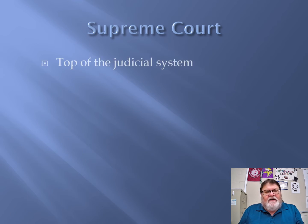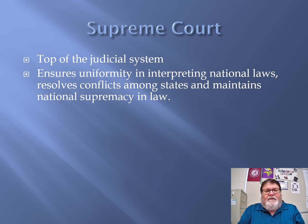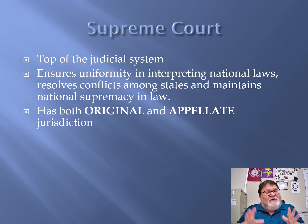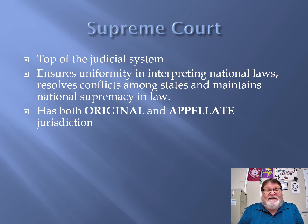Now let's get to the Supreme Court. It is of course the top of the judicial system — district, circuit, then Supreme Court. It ensures uniformity in interpreting national laws, resolves national conflicts among states, and maintains national supremacy of law. District courts have original jurisdiction only; circuit courts have appellate jurisdiction only; the Supreme Court has both original and appellate jurisdiction. The case Marbury v. Madison, which we'll discuss shortly, is actually a jurisdiction case.